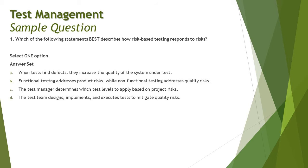Let's look at the options. Option A: when tests find defects they increase the quality of the system under test. Option B: functional testing addresses product risk while non-functional testing addresses quality risk — but product risk equals quality risk, so there's no difference there; this option can be declared null and void. Option C: the test manager determines which test levels to apply based on project risk — that's not specific enough since product risk also helps determine test levels.